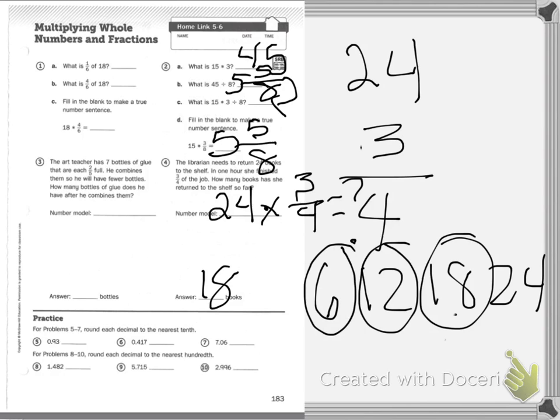Practice. For problems 5 through 7, round each decimal to the nearest tenth. Tenth, tenth, tenth, that th sound, tenth. And then for problems 8 through 10, round each decimal to the nearest hundredth. Hundredth.